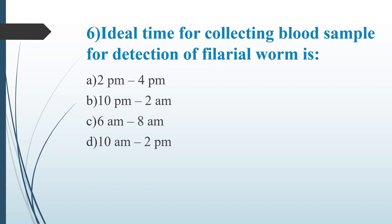Sixth Question: Ideal time for collecting blood sample for detection of filarial worm is — Option A: 2pm to 4pm, Option B: 10pm to 2am, Option C: 6am to 8am, Option D: 10am to 2pm. Answer is Option B, 10pm to 2am. Lymphatic filariasis microfilariae such as Brugia malayi and Wuchereria bancrofti circulate in the peripheral blood at night — this is called the nocturnal period.